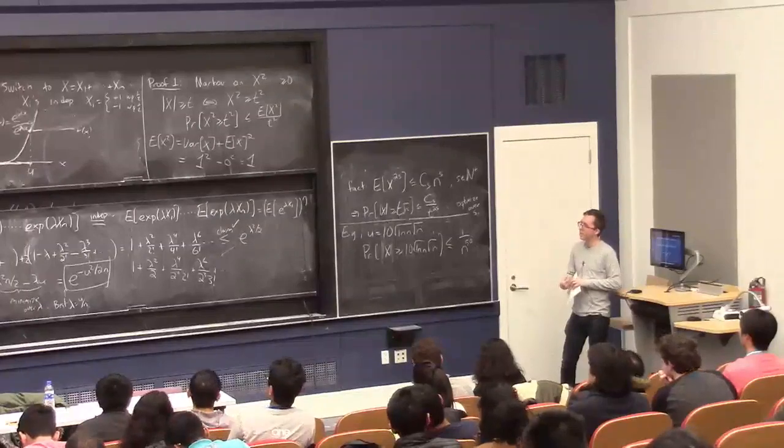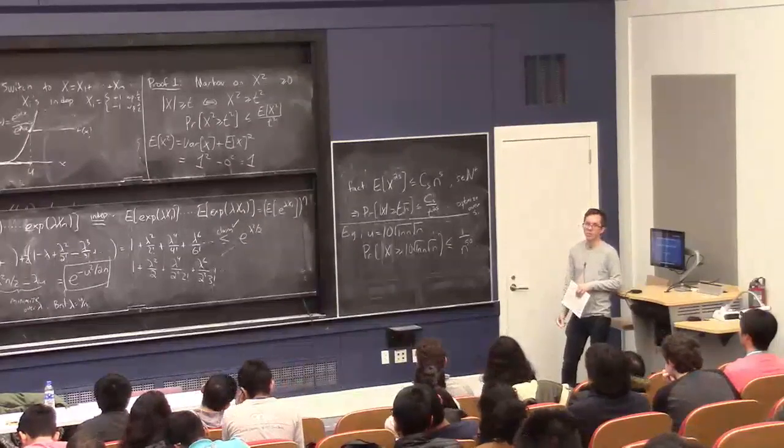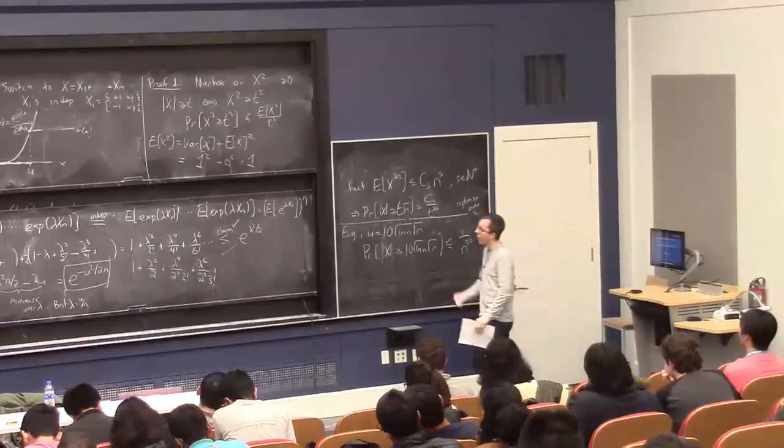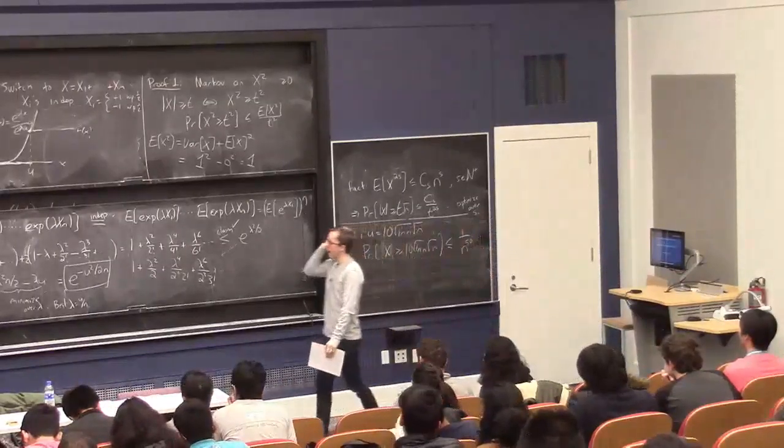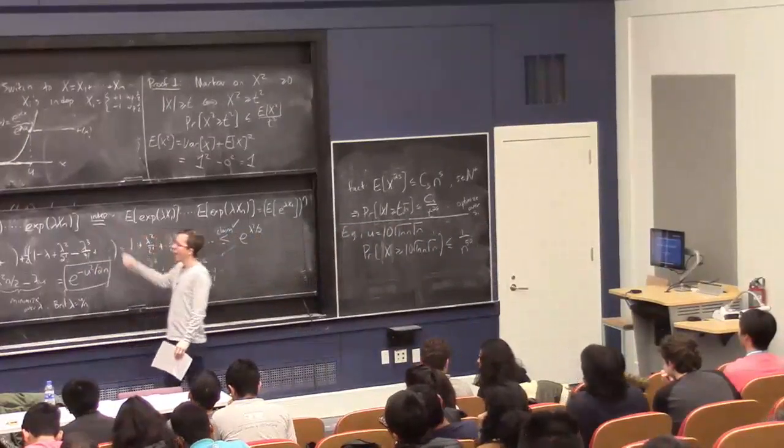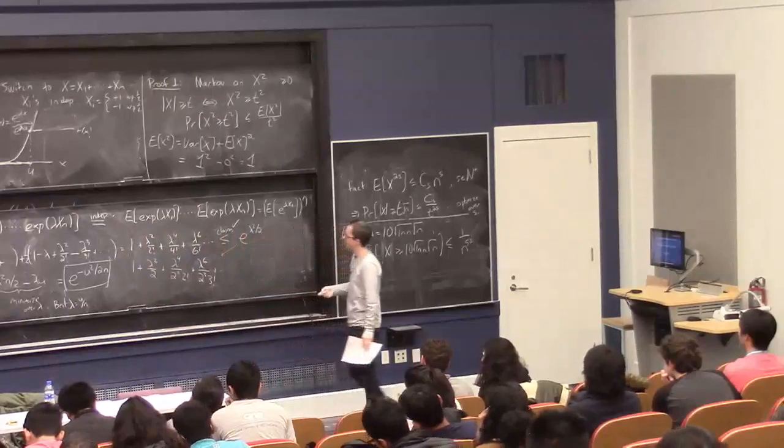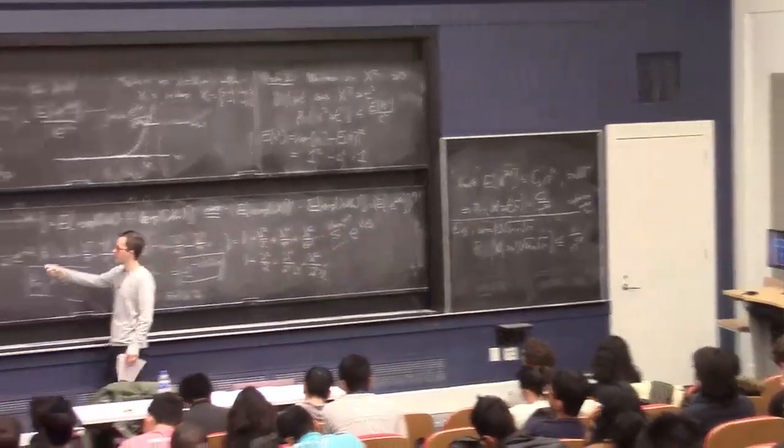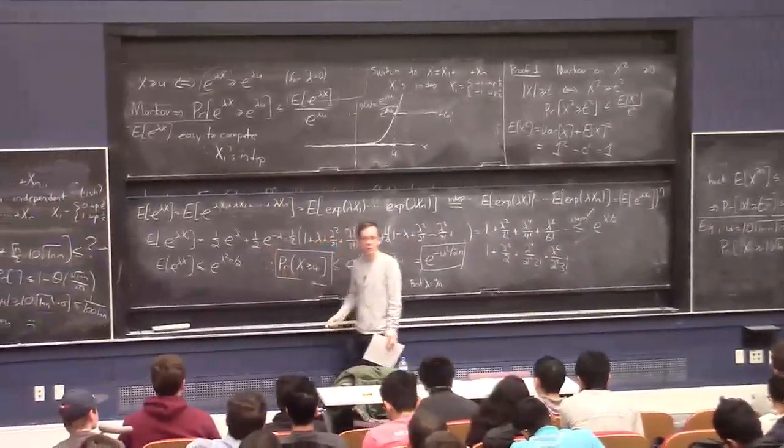So this proof I've just shown you is like the simplest possible kind of case of Chernoff bounds or Hoeffding bounds. Chernoff-Hoeffding bounds are always about sums of independent random variables, and we use the independence crucially here. But then we did use some more facts about the random variables when we literally did this computation here. We used the fact that there are plus or minus one random variables with probably half each.